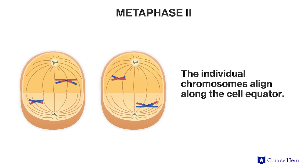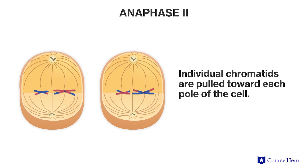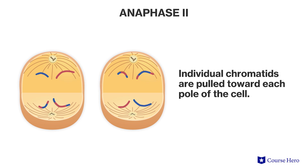During metaphase two, the individual chromosomes, consisting of chromatid pairs, line up on the cell equator. This differs from metaphase one, where we saw pairs of homologous chromosomes lining up. During anaphase two, the centromeres break down and the sister chromatids begin to separate as the spindle fibers shorten. Separated chromatids, which we now refer to as chromosomes, move to opposite ends of the cell.